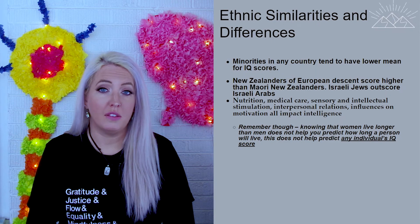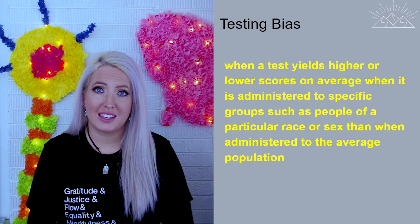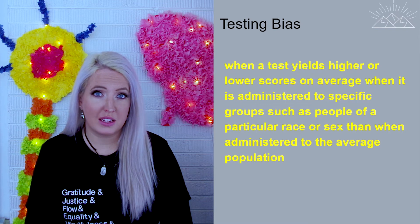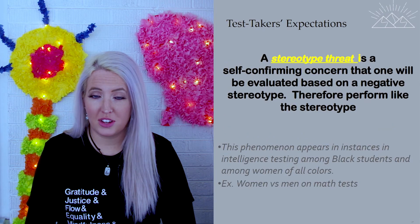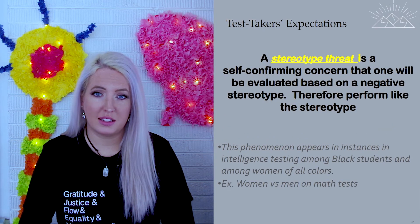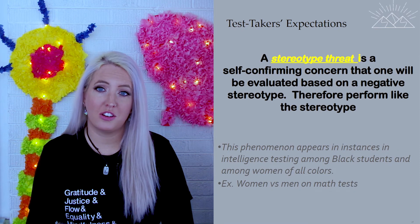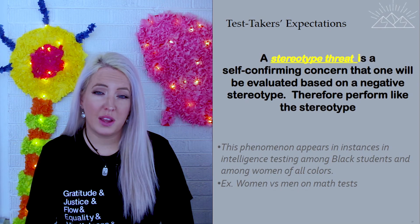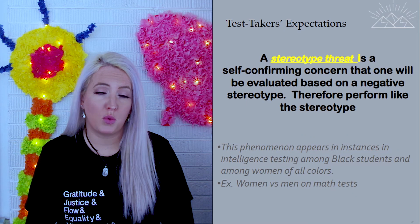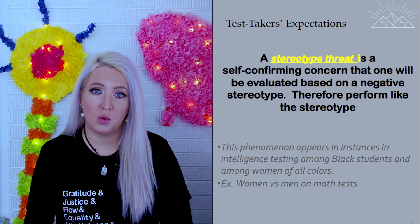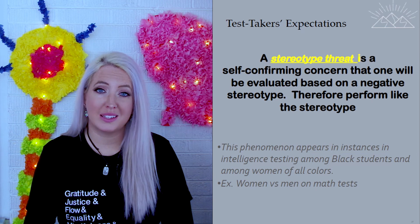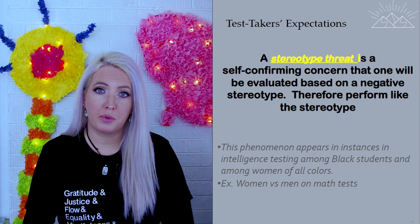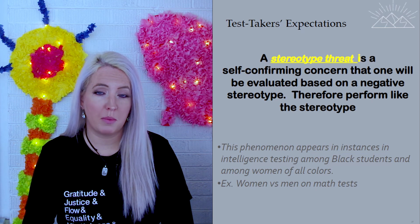More than anything, this raises the question of testing bias — when a test yields either higher or lower scores on average when administered to a specific group, such as people of a particular race or sex, compared to the average population. Test takers' expectations can also play a role in outcomes. The concept of stereotype threat describes a self-fulfilling prophecy where one expects to be evaluated based on a negative stereotype and then performs in line with that stereotype. We see differences in test scores when test takers are Black and the proctor is white, or when the proctor is male and the test taker is female — suggesting stereotype threat has an unconscious influence on individual test scores.